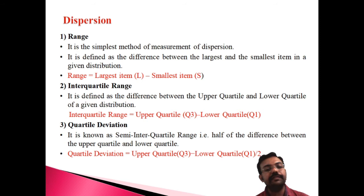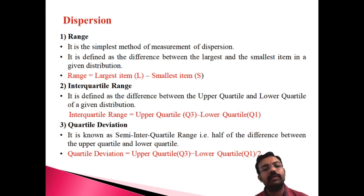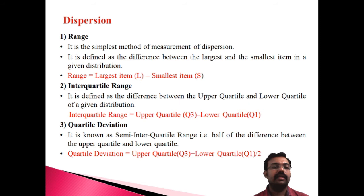The third measure is quartile deviation. Quartile deviation is (Q3 − Q1) / 2 — also known as the semi-inter-quartile range. It represents half of the difference between the upper quartile Q3 and the lower quartile Q1. So the first is range, the second is inter-quartile range, and the third is quartile deviation.